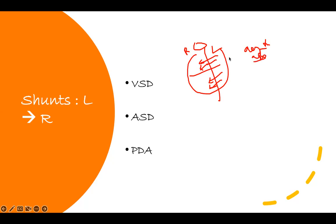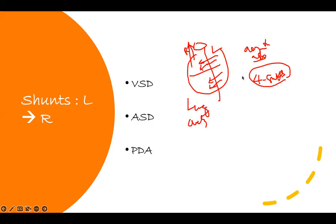But as more blood keeps getting shunted from the left side to the right side, after four to eight weeks they start getting symptomatic. Blood is being pumped from the left side to the right side and then going to the lung, so the lung becomes overwhelmed. Therefore, they will start to have symptoms of heart failure. By four to eight weeks, as the lung gets overwhelmed, they will develop symptoms of congestive heart failure.